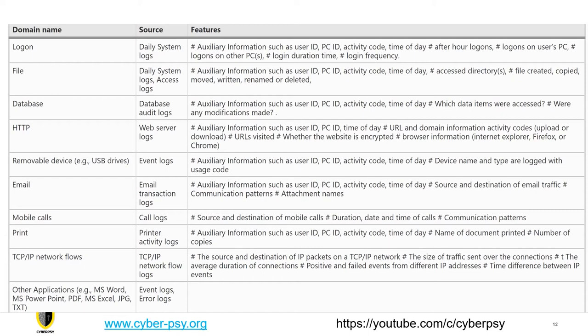For email, email transaction logs are the source to get information on source and destination of emails, email traffic, and communication patterns. In case of mobile calls, it is source and destination of the mobile calls, duration, time, and communication patterns. For print activity logs, it can be the ID, activity code, time of day, name of document printed, and number of copies printed.